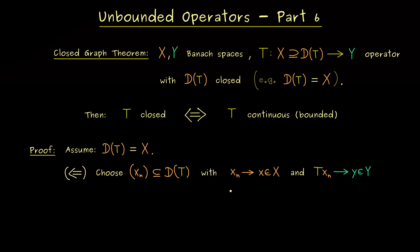And what we need as an assumption for the sequence is that the sequence x_n converges to a point x in X and that the images Tx_n also converge to a point y in Y. And now if we can show that T applied to x is actually y, then the operator is closed.